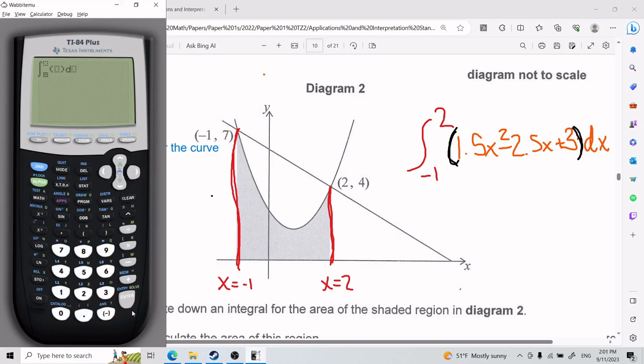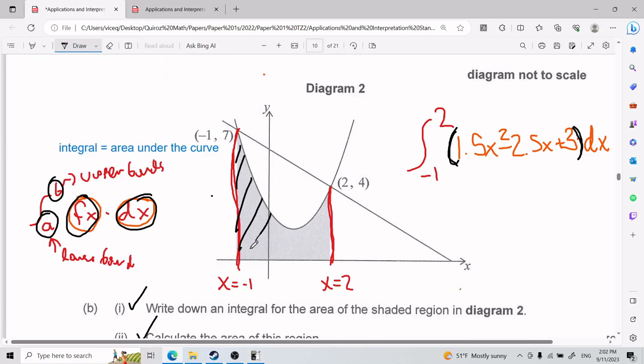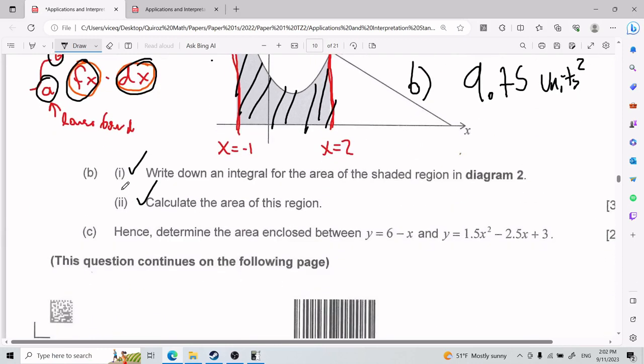So you go ahead and press it and boom. You can notice that it's asking for the same four things that I mentioned earlier: the lower bound, the upper bound, your function, and in respect to which variable. So my lower bound is negative 1, my upper bound is 2, my function is 1.5x squared minus 2.5x plus 3. And d of what? d of x. I'm doing the integral in respects to x. Go ahead and press enter. Boom, it solves it for you. So the area that is here, the area under the curve, is going to be 9.75. Now 9.75 what? 9.75 units squared. That is for part B(ii).